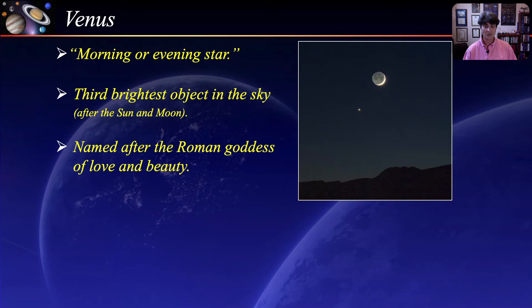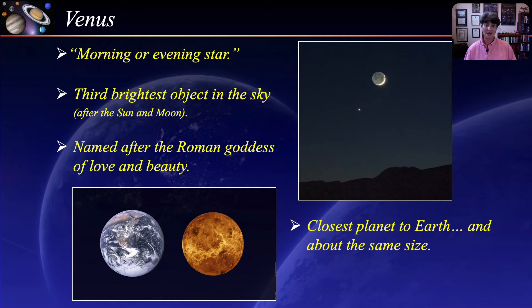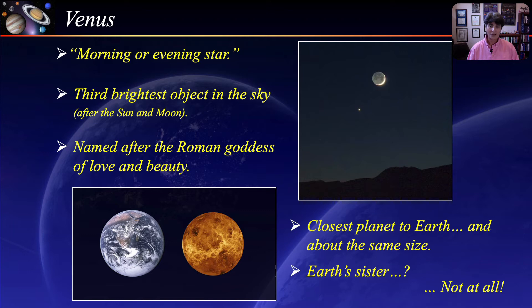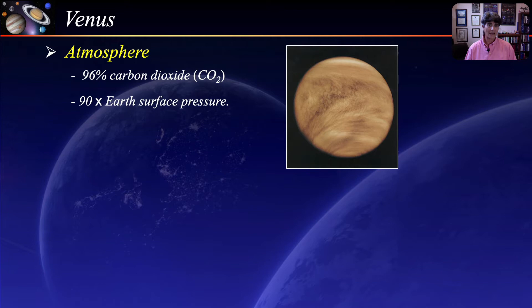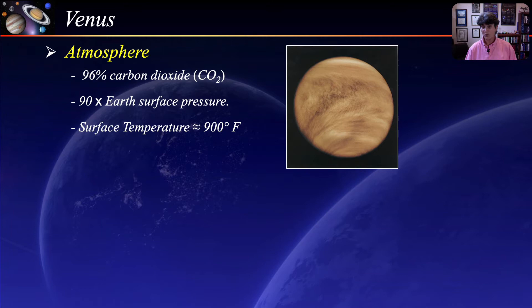Venus is the only planet in the solar system to have a female name. Venus is the closest planet to Earth and is about the same size. Because it also has clouds and an atmosphere, it was thought to be possibly a sister planet to Earth, but it turns out not to be the case at all. Venus has an atmosphere, but it is 96% carbon dioxide. The atmosphere is so thick that the atmospheric pressure at the surface is 90 times that of Earth.